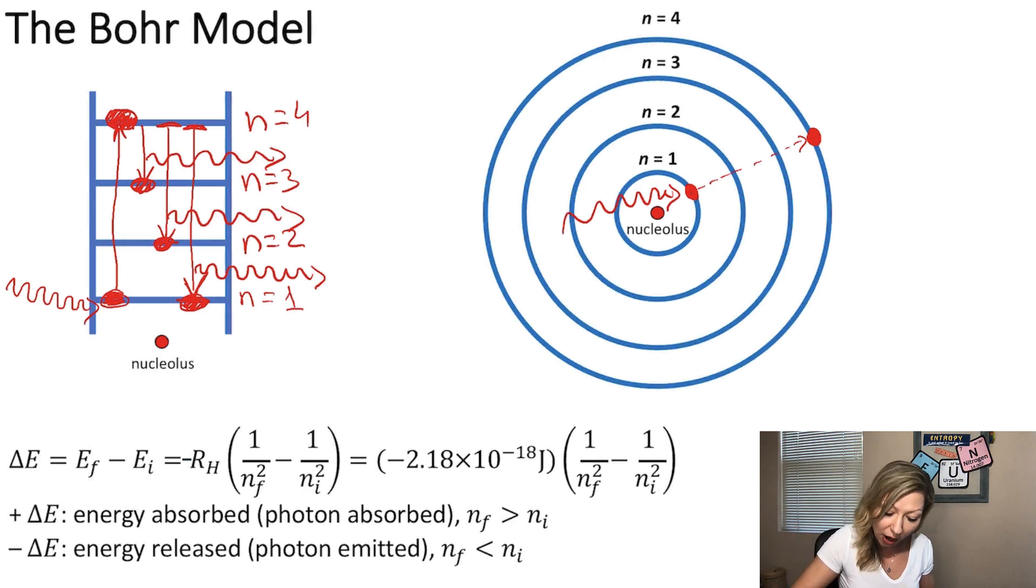And Niels Bohr used the following formula. So he said that the change in energy for the electron equals to the final energy state minus the initial energy state, which equals to the Rydberg constant given in joules multiplied by 1 over N final squared minus 1 over N initial squared. So N final and N initial are the numbers given to these orbits.